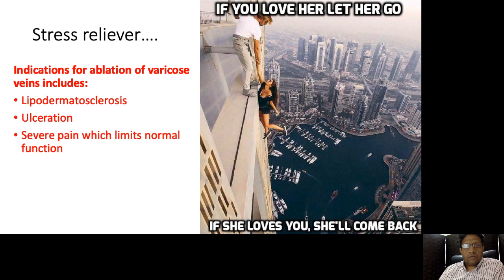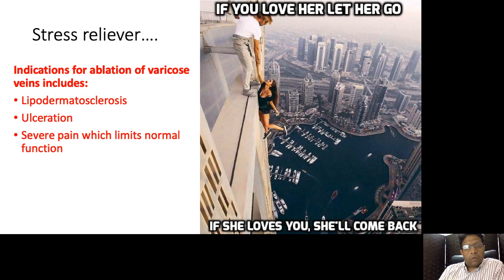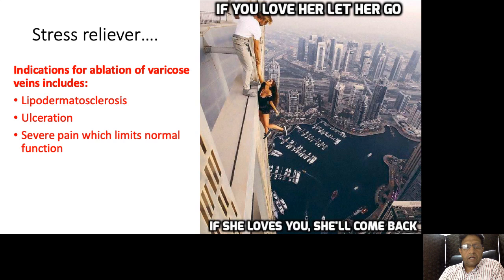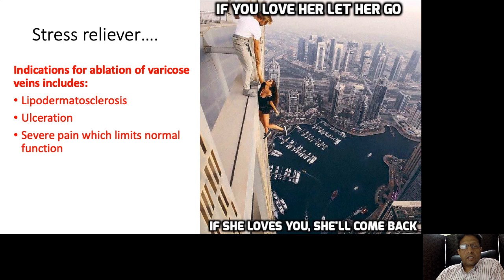Indications for the ablation of varicose veins include lipodermatosclerosis — those of you who watched the previous lecture will remember the inverted wine glass deformity of the lower leg where the skin is thickened, darkened, and narrows around the ankle, which is where ulceration typically forms. Ulceration is also an indication for surgery, as is severe pain which limits normal function. We do not typically operate just for pain — the patient must have significant symptoms. We do not operate based solely on the extent or duration of reflux determined on venous Doppler; it is the symptomatology which suggests surgery or radiofrequency ablation is indicated.